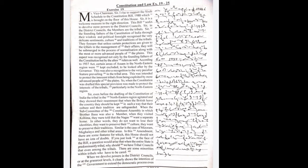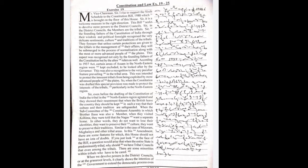When the British leave the country, they should be kept in such a way that their culture and tradition are safeguarded. When the subcommittee of the Constituent Assembly, in which Brother Basu was also a member, visited Kohima, they were told that the Nagas want a separate home.